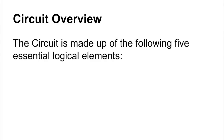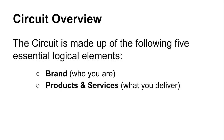The circuit is made up of five elements that are logical and true — not some academic idea, but the real elements that make up a potential business. It starts with the brand, which is the center of everything: who you are, who is selling this, who is making this promise. The brand then has multiple products and/or services, and there's an important distinction between products and services.